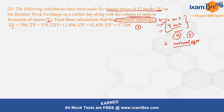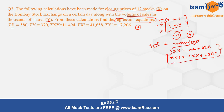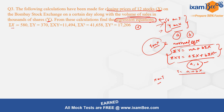For regression of y on x, the two normal equations are: Σy = na + bΣx and Σxy = aΣx + bΣx². You have two equations and two unknowns a and b; plug in the given values and solve. Once you get a and b, your regression equation is y = a + bx. Similarly for x on y, write the two normal equations, solve for p and q, and get x = p + qy.